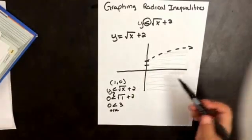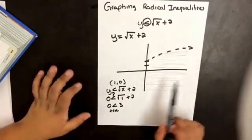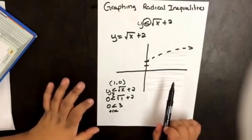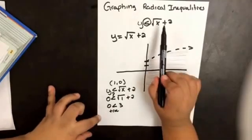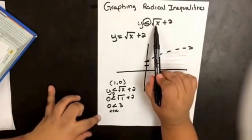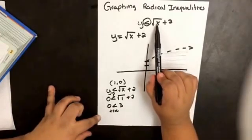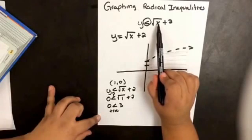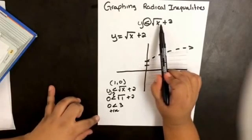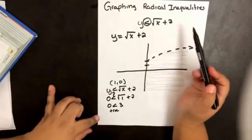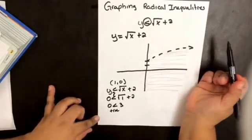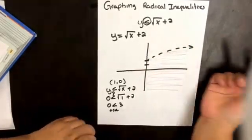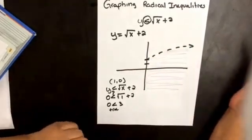We want to shade only the positive x values, because if we put a negative value inside the radical it would give us an imaginary answer, and we don't want that.